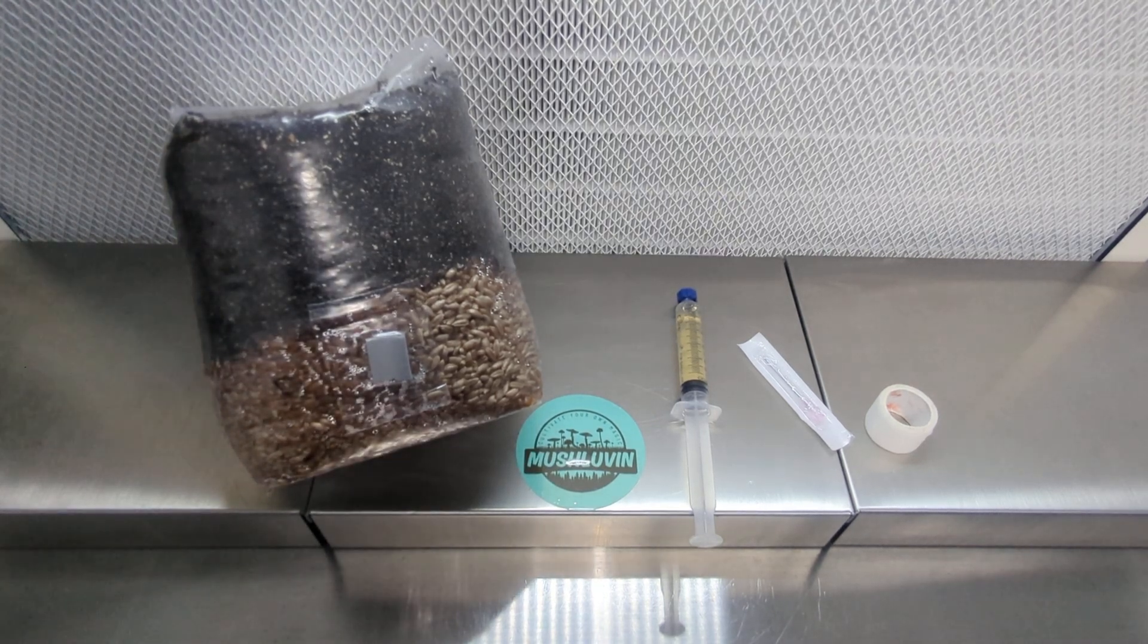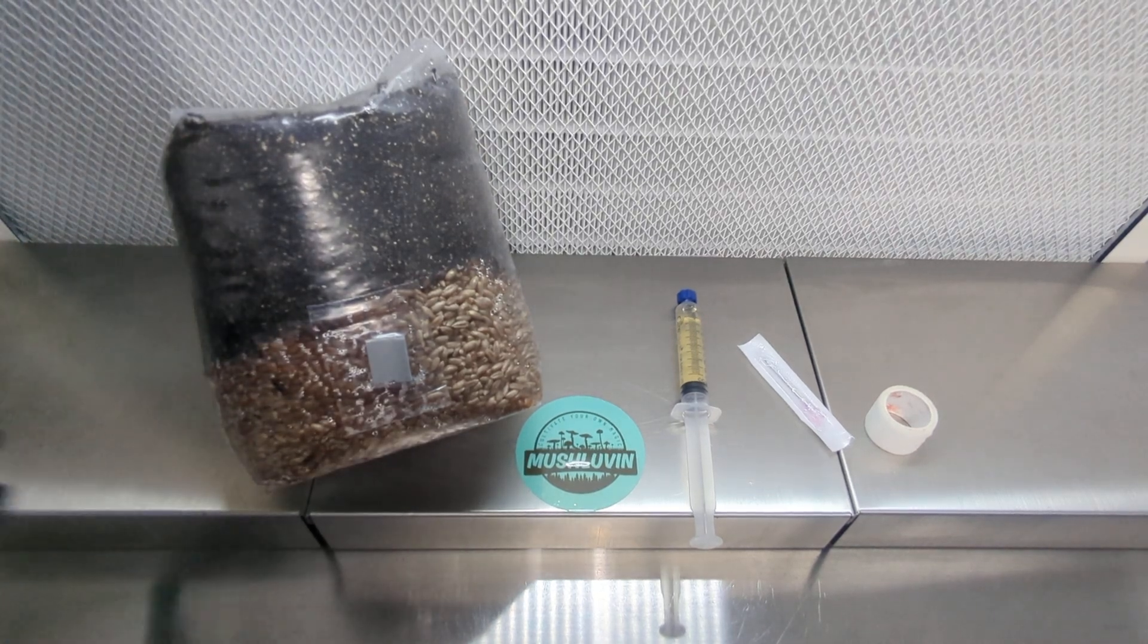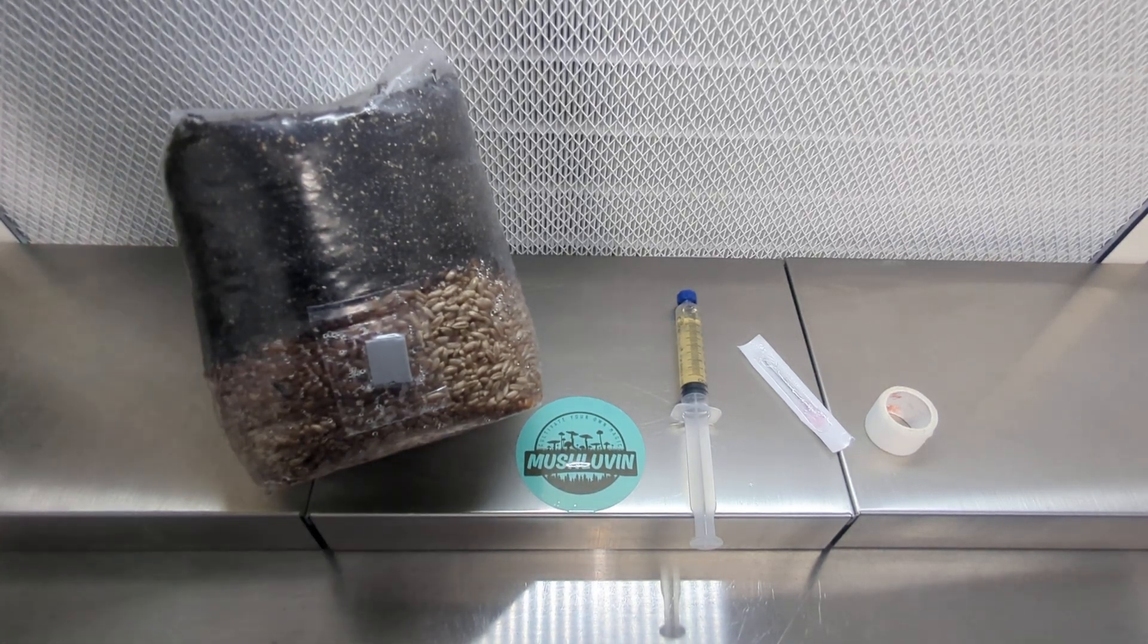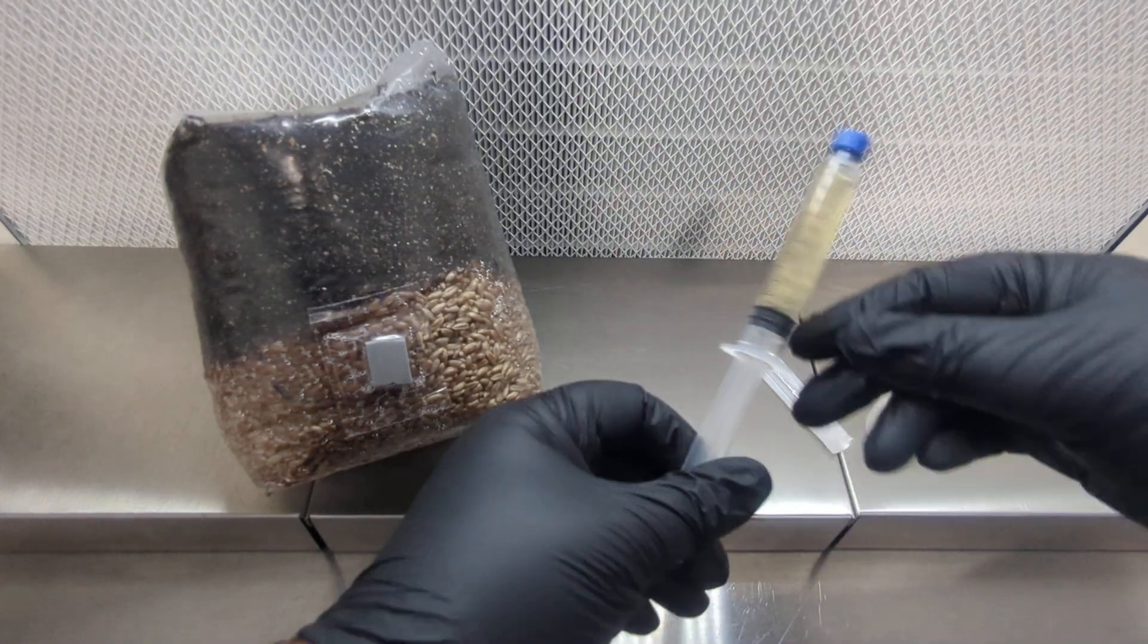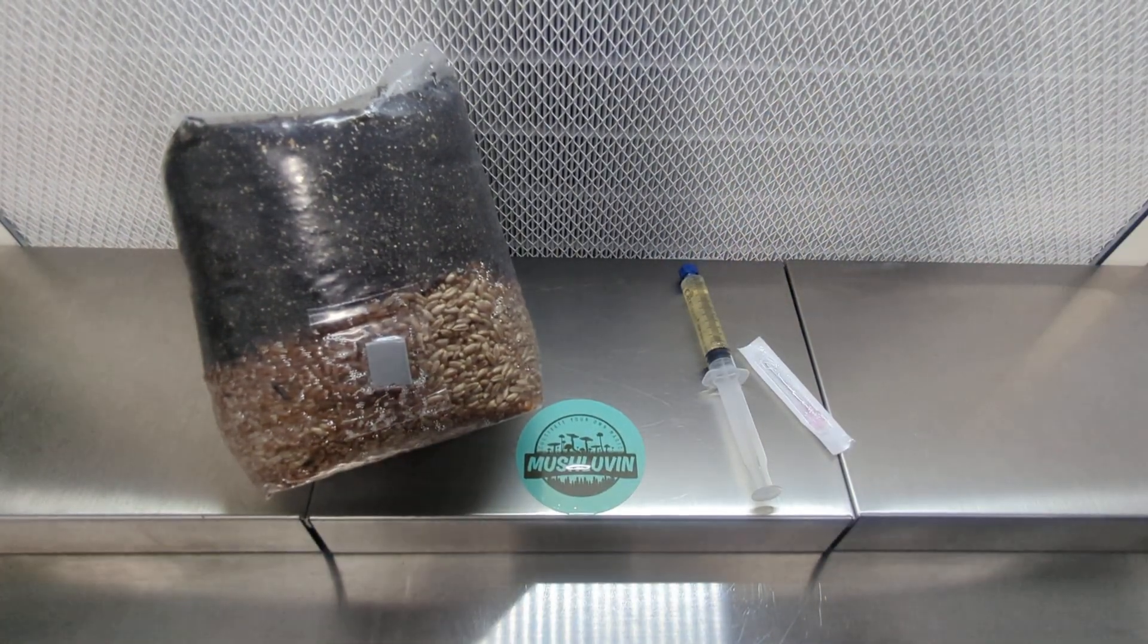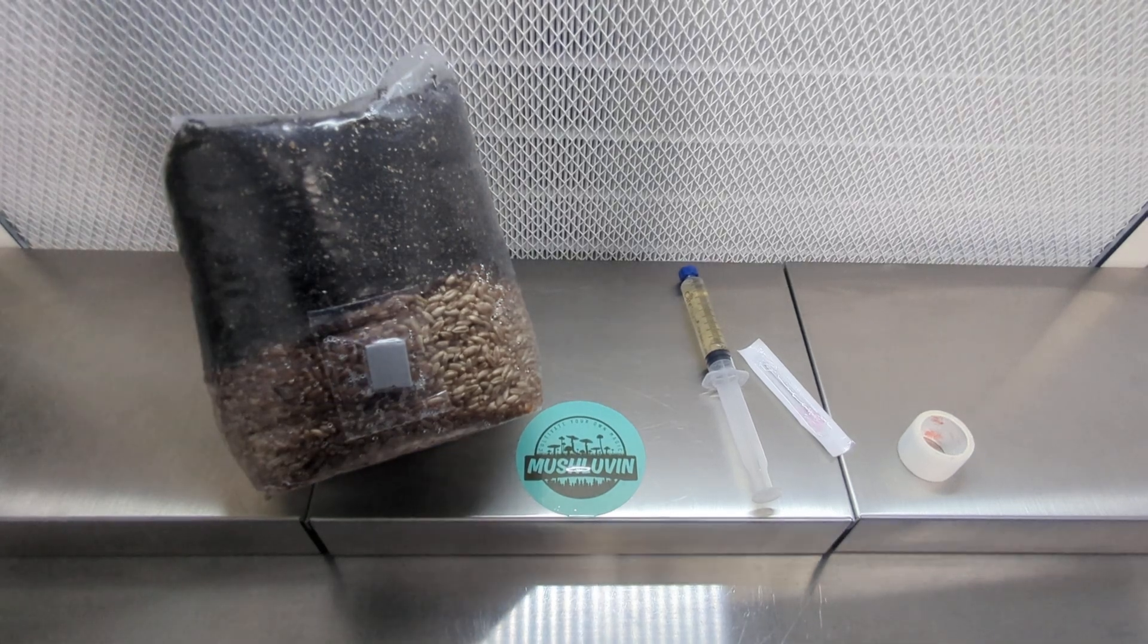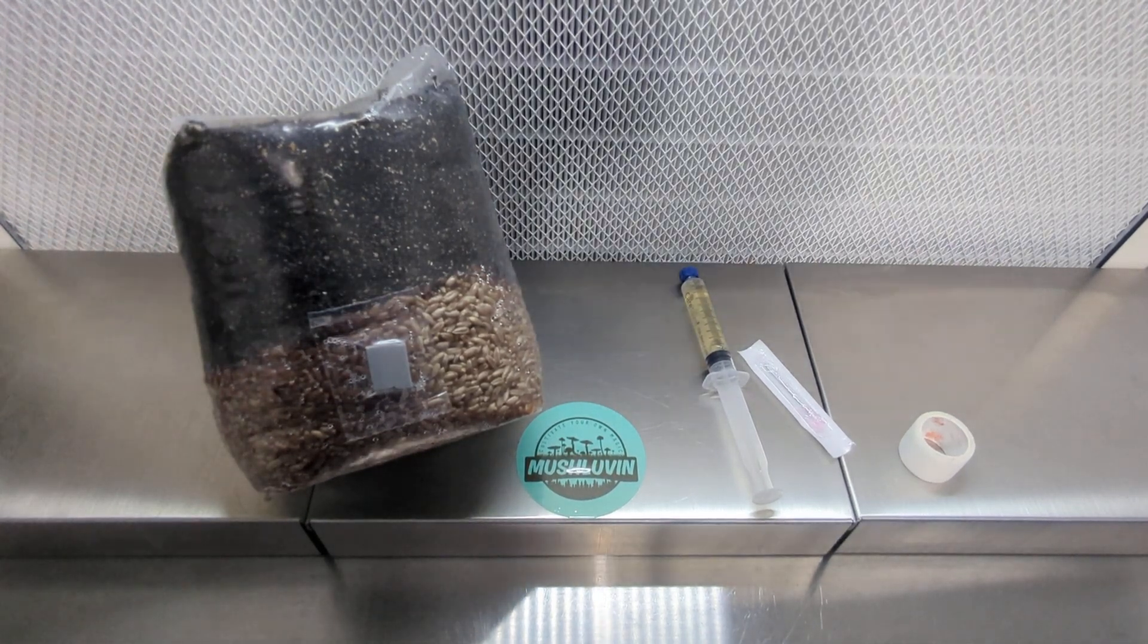So we're going to go ahead and jump in here. I've already cleaned my area. I've wiped down the bag with 70% isopropyl alcohol to make sure any contamination risk has been taken care of. I've also wiped down the syringe with alcohol and the needle. I'm going to use micropore tape to cover the inoculation hole once I am done. You can use any type of tape, packing tape is just fine.